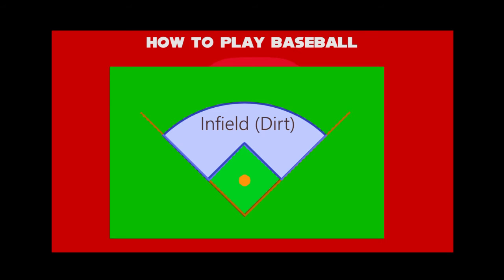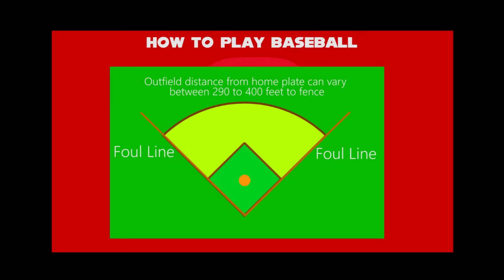where the all-important duel between the pitcher and batter takes place. The lines from home plate to first and third bases extend to the nearest fence, stand, or other obstruction and are called the foul lines. The portion of the playing field between the foul lines is fair territory; the rest is foul territory.